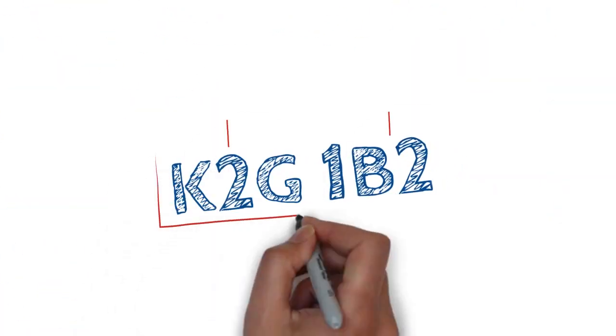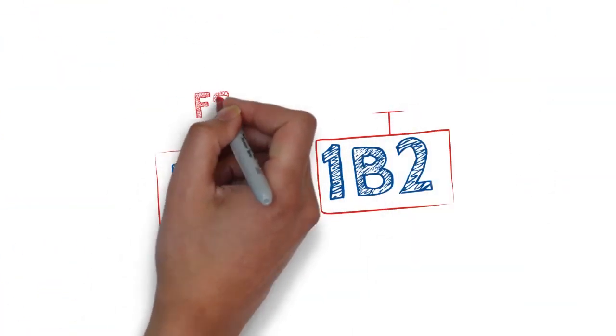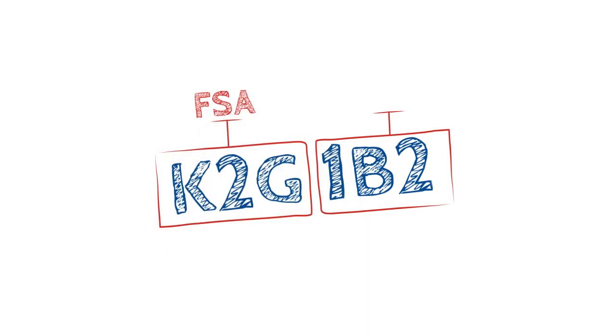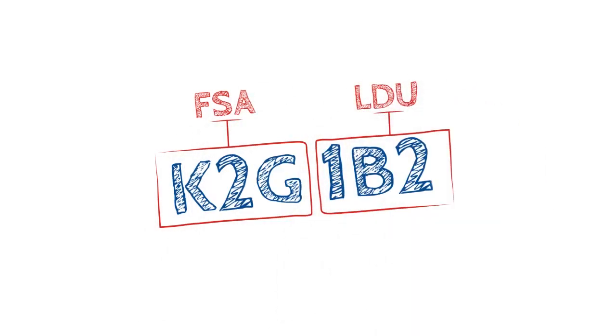The postal code is made up of two distinct yet very important parts: the FSA, or Forward Sortation Area, and the LDU, or Local Delivery Unit.